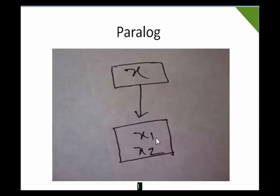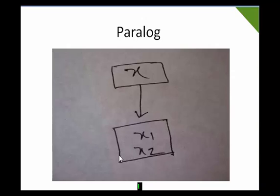The duplication genes are parallel to each other — even over time they might become different in sequence and function. As time passes, they remain in a different gene manner but are contained within the same species.